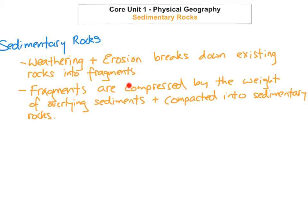So just to summarise the definition: sedimentary rocks form when weathering and erosion breaks down existing rocks into bits of sediment, which we call fragments. These sediments or fragments are then compressed by the sheer weight of the overlying sediments on top of them, and then they're compacted into sedimentary rocks.